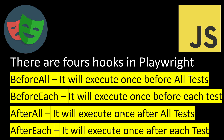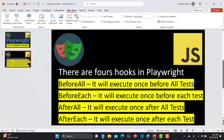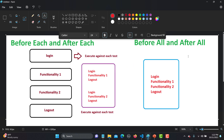So why do we need to execute something before and after? Let's understand this with an example. In today's world, most applications have a login. Your approach is: log in, check functionality one, then log out — then log in again, test functionality two, and log out. Login and logout are repeating, so we'll use them as hooks — beforeEach and afterEach.